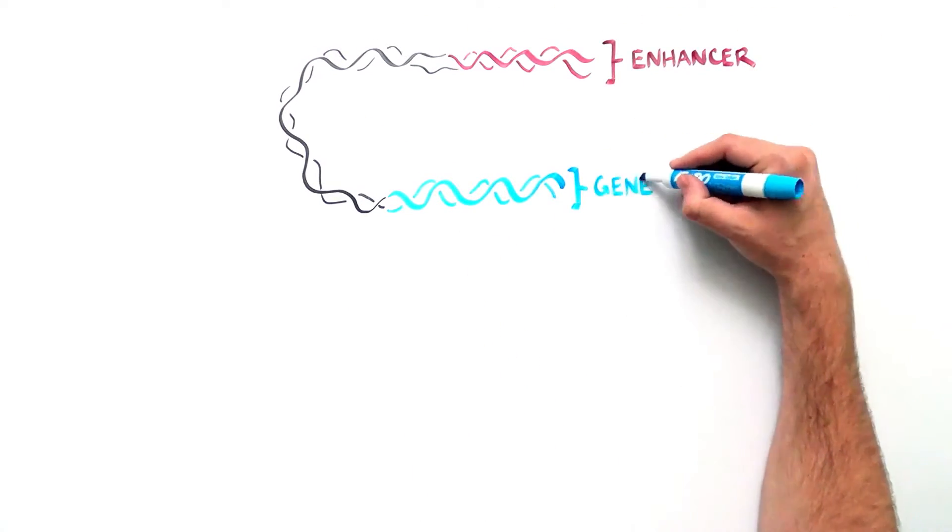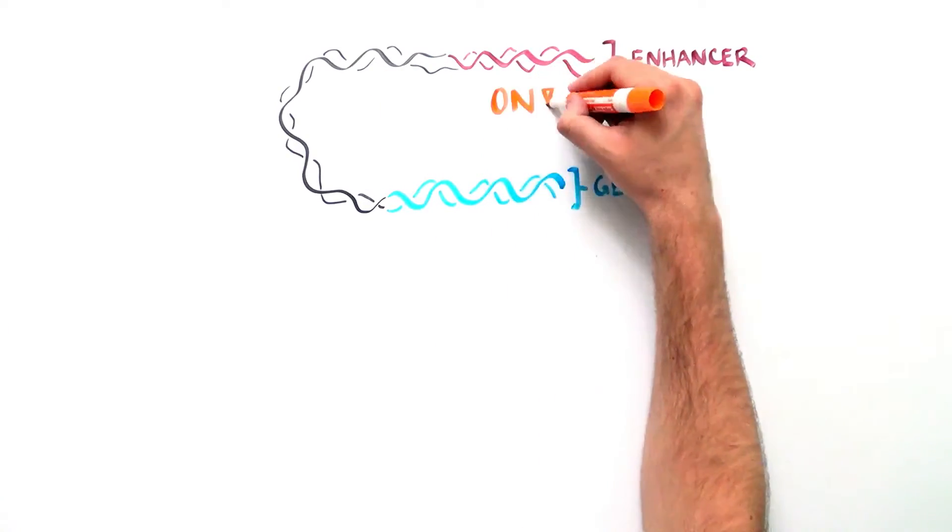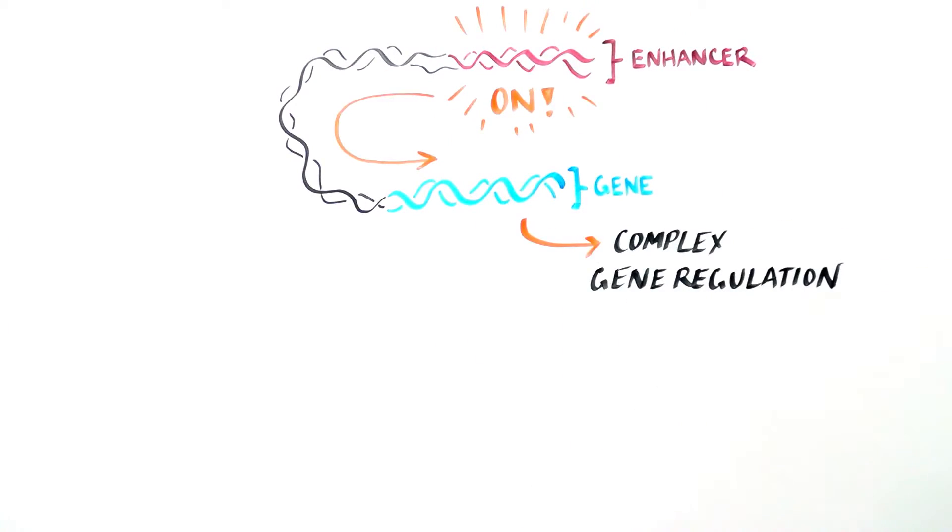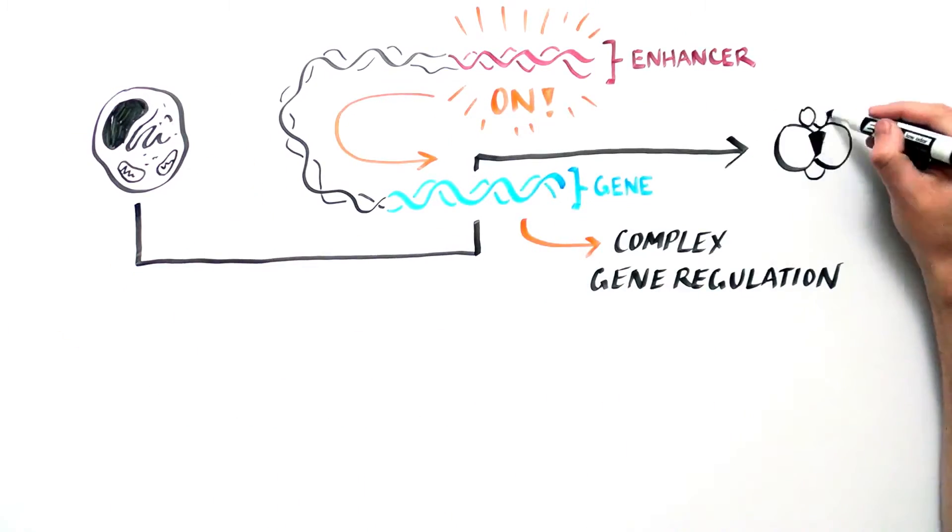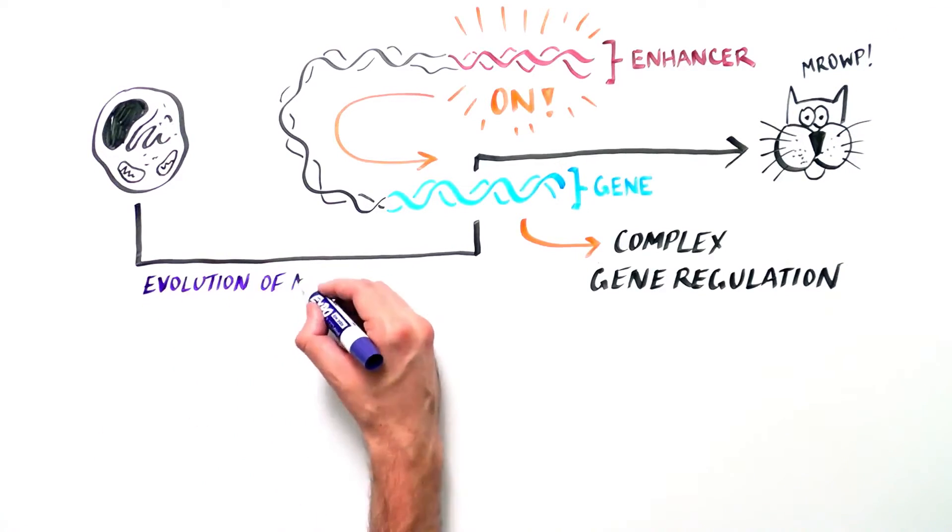These enhancers may constitute the basis for the sophisticated gene regulation observed in animals and may be the missing key to understanding evolution of multicellularity.